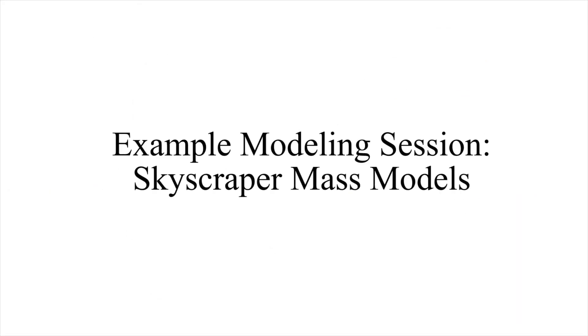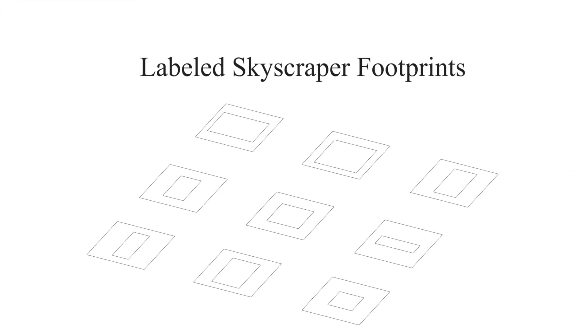Next, we show how our method can be used to create a variety of mass models by applying simple extrusion and Boolean operations to the propagated shapes. In this modeling session, the goal is to create the mass models for 9 skyscrapers. The starting point is a set of labeled skyscraper footprints. The upper right corner shows which operation is performed in each step.